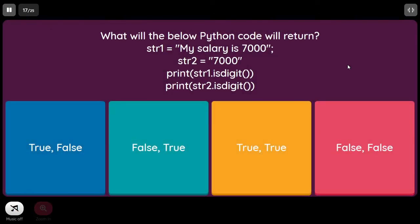What will the below Python code return? str1 equal to 'my salary is 7000', str2 equal to '7000'. print str1.isdigit() — it's not purely digits, so it returns False. print str2.isdigit() — str2 contains purely digits with no alphabets, so it returns True. The answer is False and True.